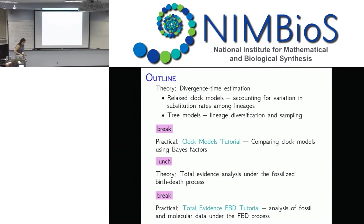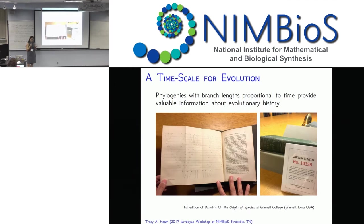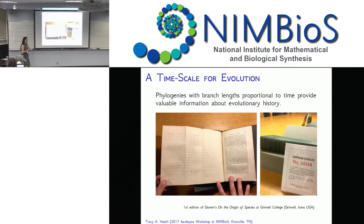So today I'll start with general things about divergence time estimation. One of the things that most evolutionary biologists realize is that phylogenies with branch lengths in proportion to absolute evolutionary time give us a lot of information about evolutionary history. This is a picture of the only figure in the Origin of Species by Darwin - it's a time tree. Even Darwin was thinking about conceptualizing phylogeny in the context of time.